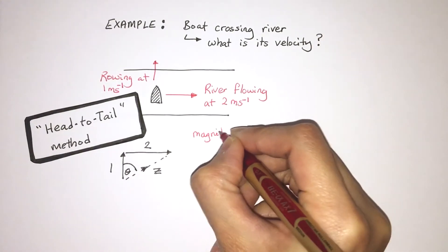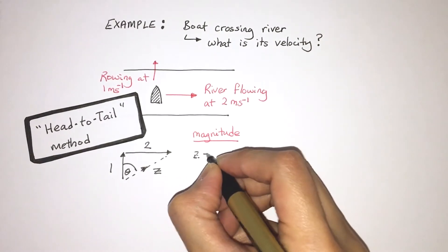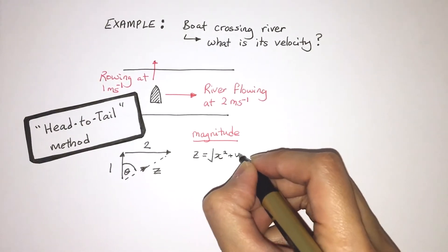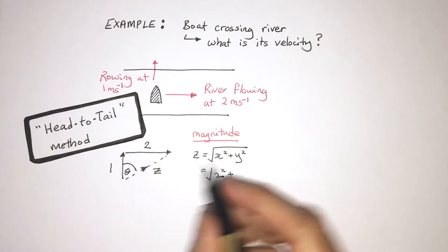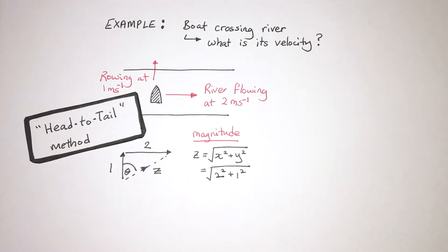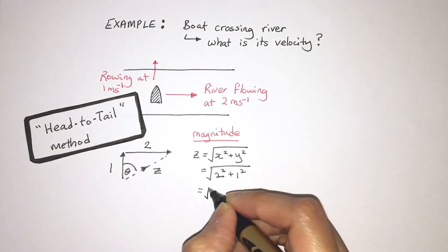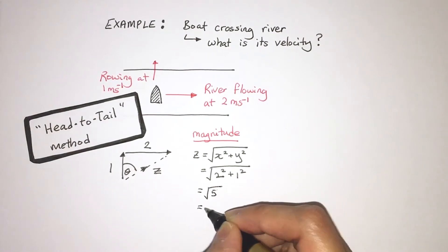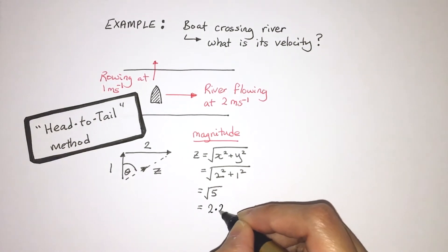To find the magnitude, again, I use Pythagoras. And that is just 2 squared plus 1 squared. And then all of this square rooted. Square root of 2 squared plus 1 squared. And that gives me 2.24 meters per second.